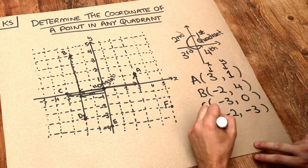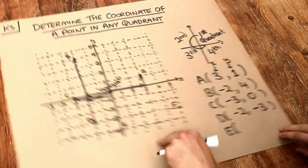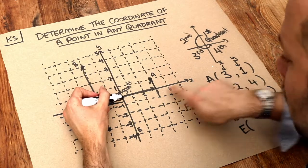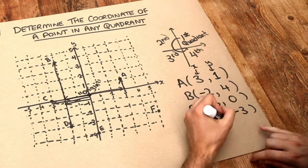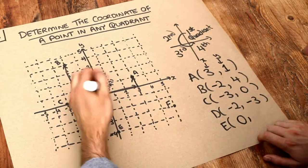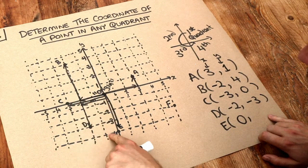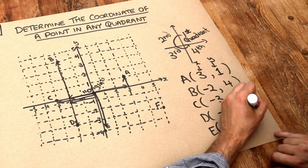And then E, from the origin, we don't have to go left or right at all until we're level with E. So that's an x-value of zero. But we do have to go down to get to E to minus four, so the y-value is minus four.